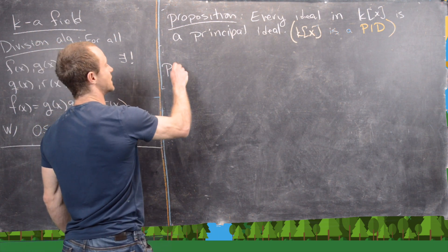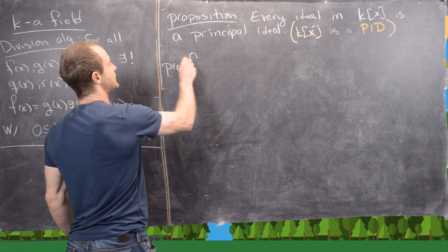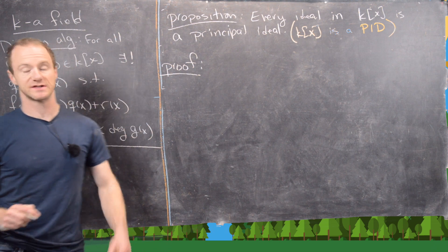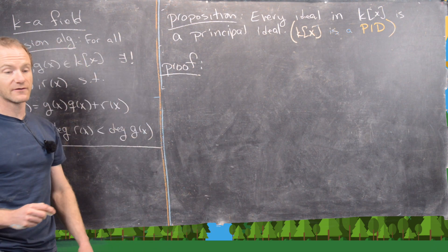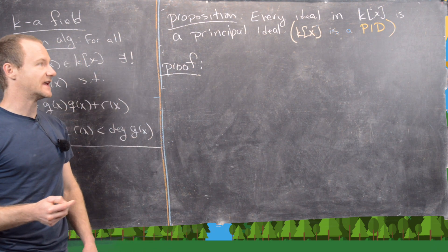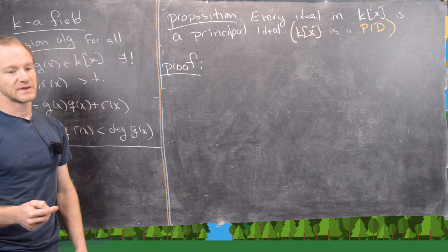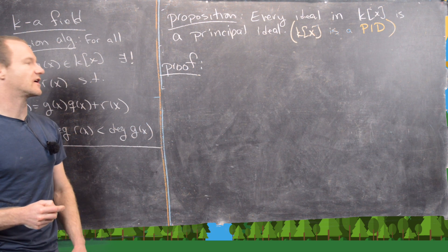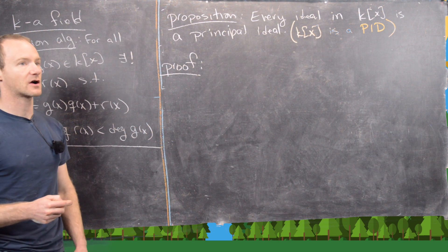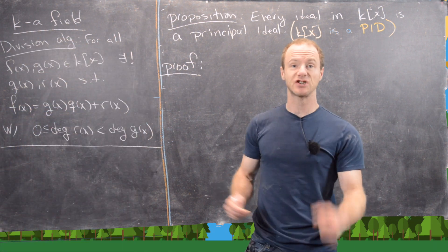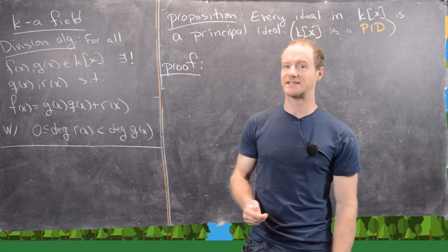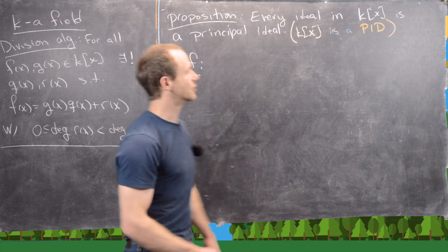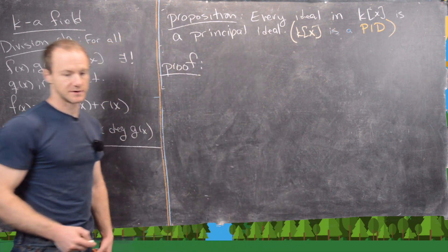Let's go ahead and see how this proof goes. If you remember the proof that the integers is a PID — in other words, every ideal inside the integers is principal — this proof goes in a very, very parallel way to that. And that just furthers the similarities of the integers with polynomials over a field.